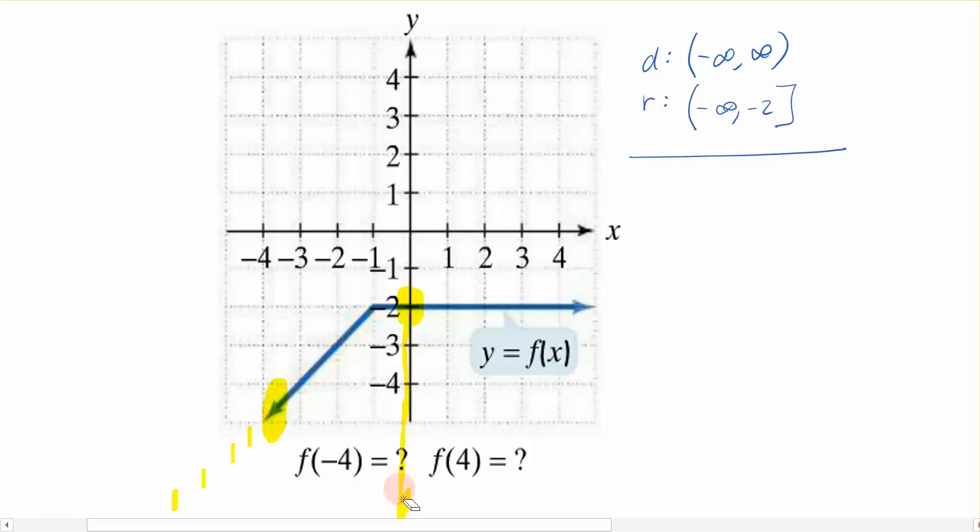Now the next thing that we're asked to find are x and y intercepts here. You can look at this blue line, which is my function, and I can clearly see that this function is never going to cross the x axis. So for the x intercept, there would be none. How about the y intercept? We can see that it is crossing the y axis over here at 0, negative 2. So the y intercept is occurring at 0, negative 2.